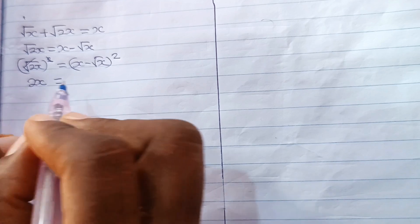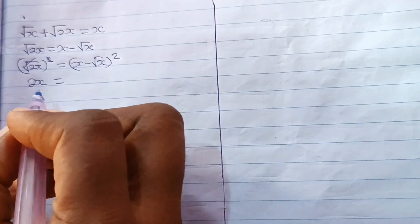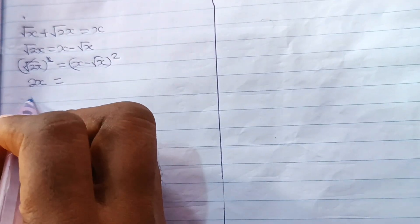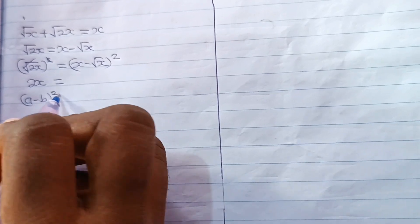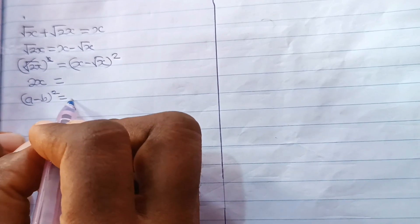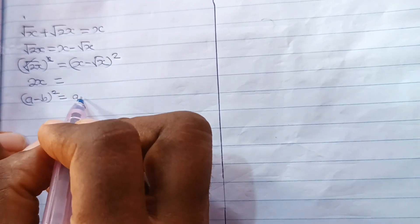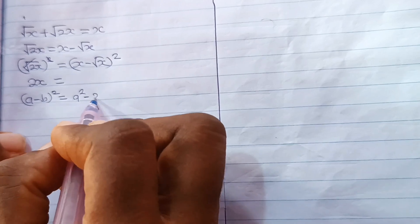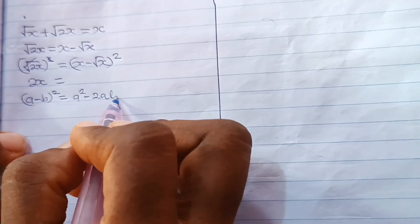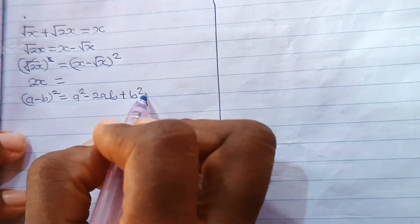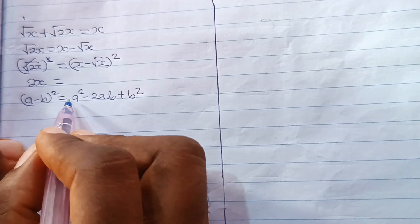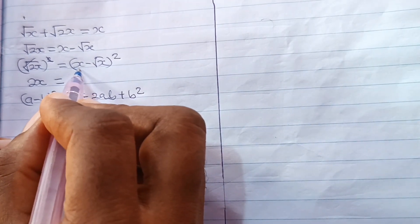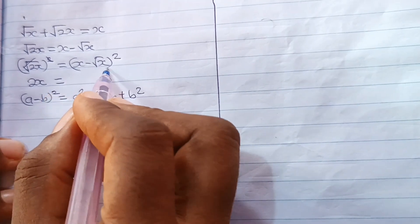Now, I want us to recall that when you have (a minus b) squared, this is equal to a squared minus 2ab plus b squared. Now, in this case, our a is x while our b is root x.